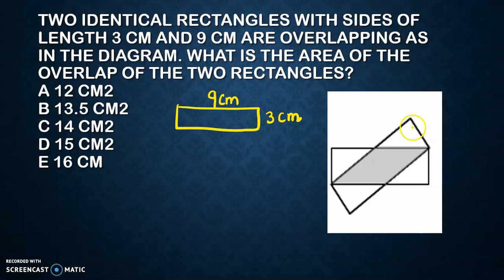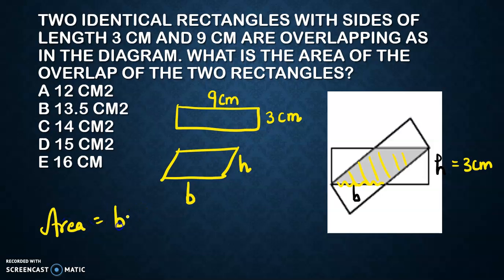You have to find the area of the overlapping figure. The overlapping shape is a parallelogram with base B and height H. This is your base B and this is your height. H is given as 3 centimeter, so your job is only to find the base, then you can straightaway find area as base times height.